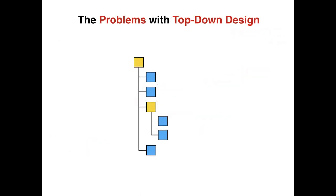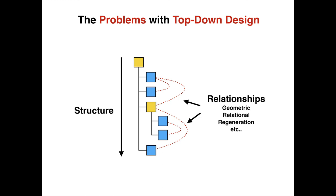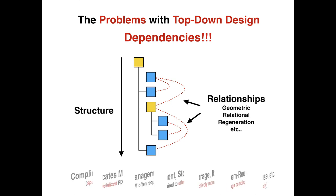One of the biggest problems is with top-down design. Top-down design has been around for years and people have put a lot of faith in it. It basically means you have an assembly structure with geometric, relational, or regeneration relationships that occur within that.